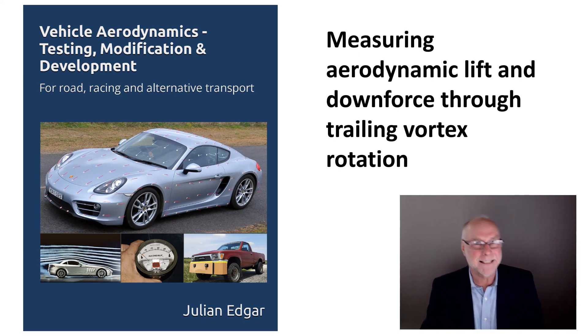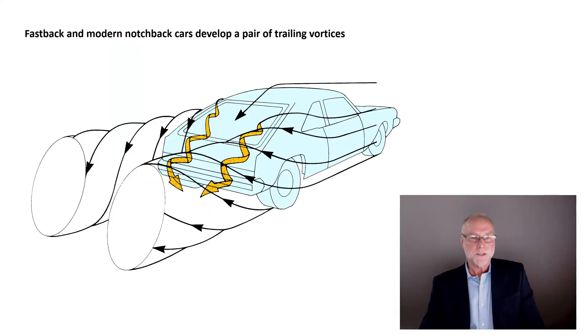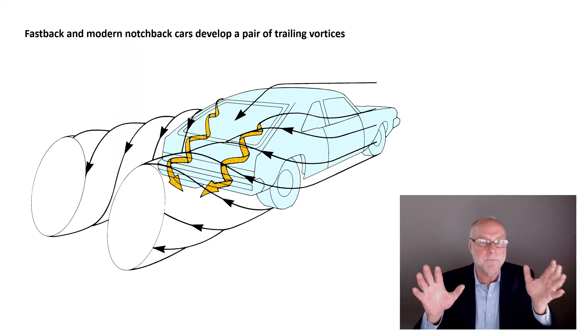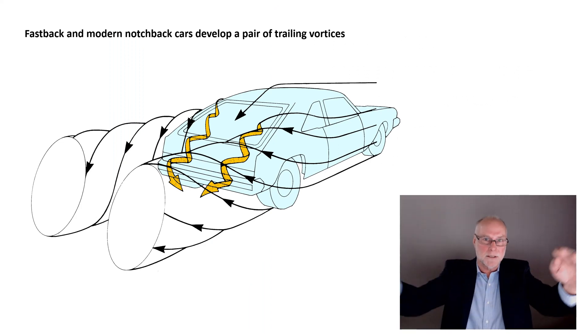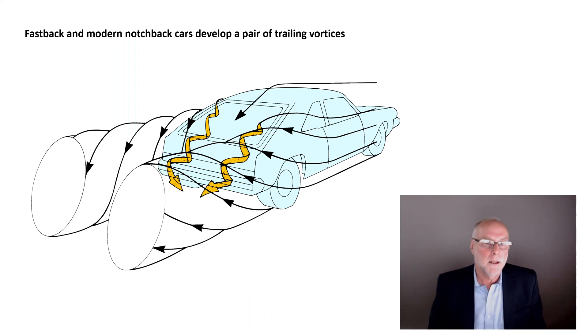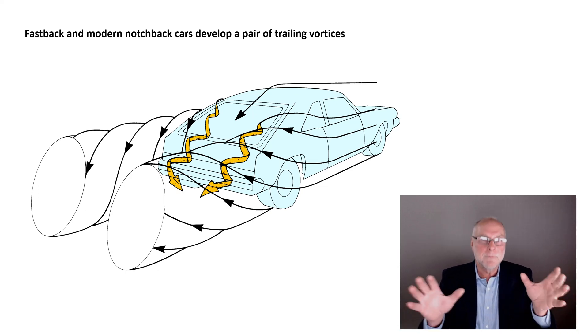It's quite a fascinating technique, applicable to certain types of cars. If you have a fastback shaped car with a sloping rear trunk, or you have a modern notchback car with a very sloping rear window, those car shapes develop a pair of trailing vortices,